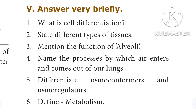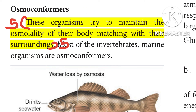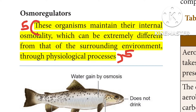Fifth question: Differentiate between osmoconformers and osmoregulators. Refer to page number 213. Osmoconformers: These organisms try to maintain the osmolality of their body matching with the surroundings. Osmoregulators: These organisms maintain their internal osmolality, which can be extremely different from that of the surrounding environment through physical processes.